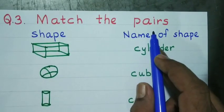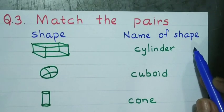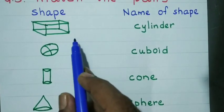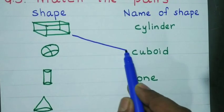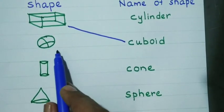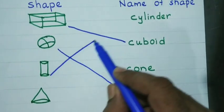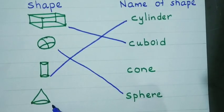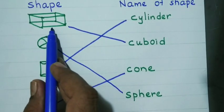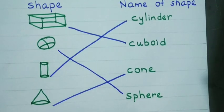Question number 3: Match the shape to the name of the shape. Look carefully. This is called a cuboid — join cuboid. This is called a sphere. This is called a cylinder. This is a cone. So: cuboid, sphere, cylinder, and cone.